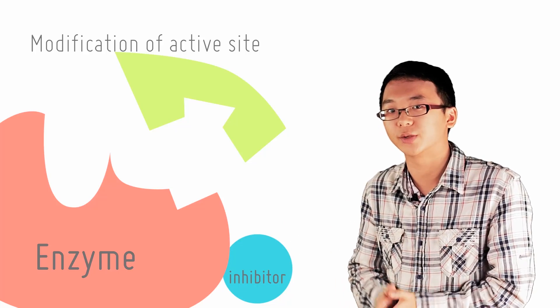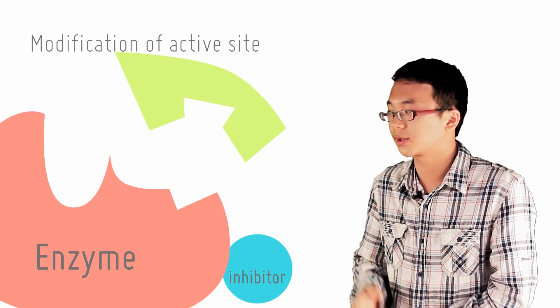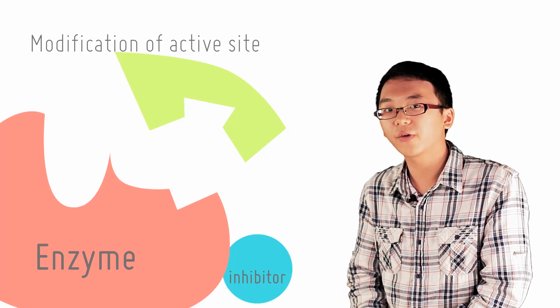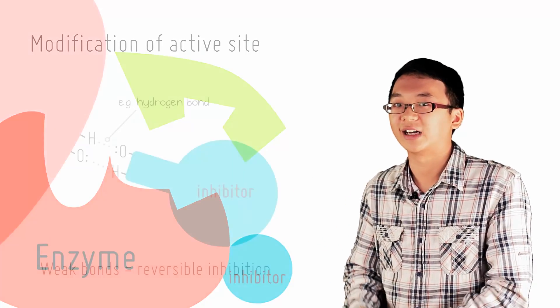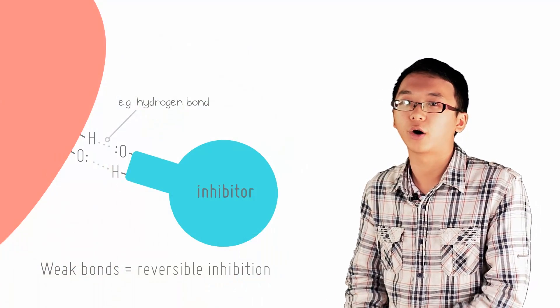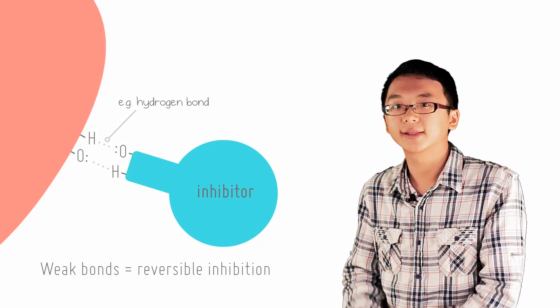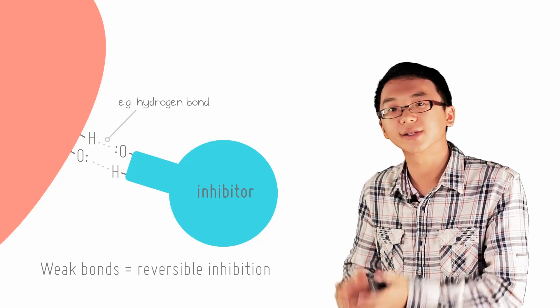Whether an inhibition is reversible or not depends on the type of bond formed between the inhibitor and the enzyme. If the bond is a weak bond, such as hydrogen bonds or non-polar or dipole interactions, the bond can be broken easily. Hence, this form of inhibition is termed reversible.